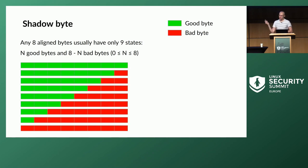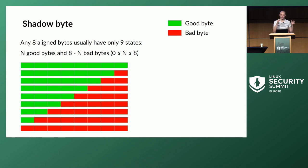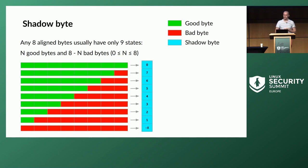The algorithm KASAN uses comes from the notion that almost any 8-aligned bytes usually have only nine different states — the first few bytes are accessible and the last few are not. This is natural because most memory allocated in the kernel comes in contiguous chunks, so you don't have alternating accessible and inaccessible bytes. Because of these nine states, we can encode the state of each 8-byte slot in just a few bits, but KASAN uses a whole byte for this — called the shadow byte.